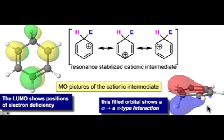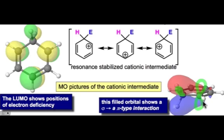For this filled orbital of the cationic intermediate, this filled orbital lies close to the HOMO — it's not the HOMO. We see an important σ-to-π-type interaction between the pair of electrons in the σ-bond of the substituent bound to that sp3 hybridized carbon and the adjacent atoms which have empty p orbitals that are part of this cationic π system.